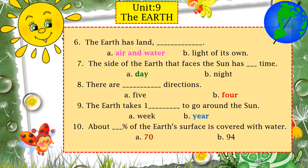Number ten: about dash percent of the earth's surface is covered with water — 70% or 94%? Yes, 70% of the earth's surface is covered with water, and 70% is equal to 3/4 part of the earth — both are equal. So 3/4 part or 70% of the earth is covered with water. You have to choose Option A: 70%.